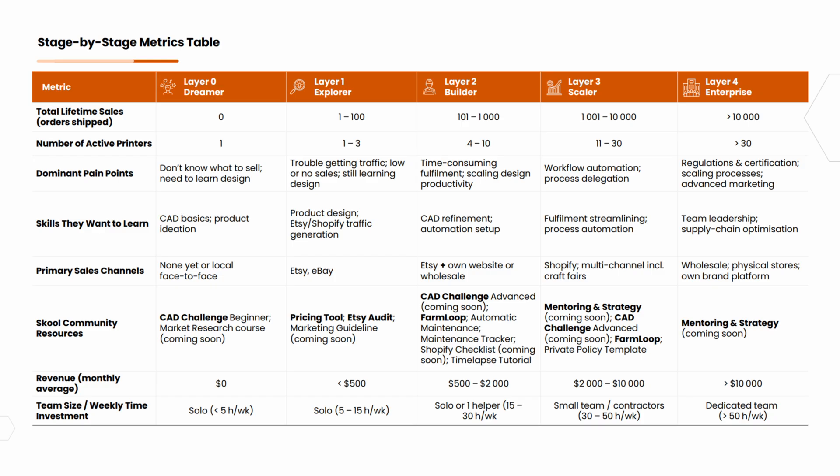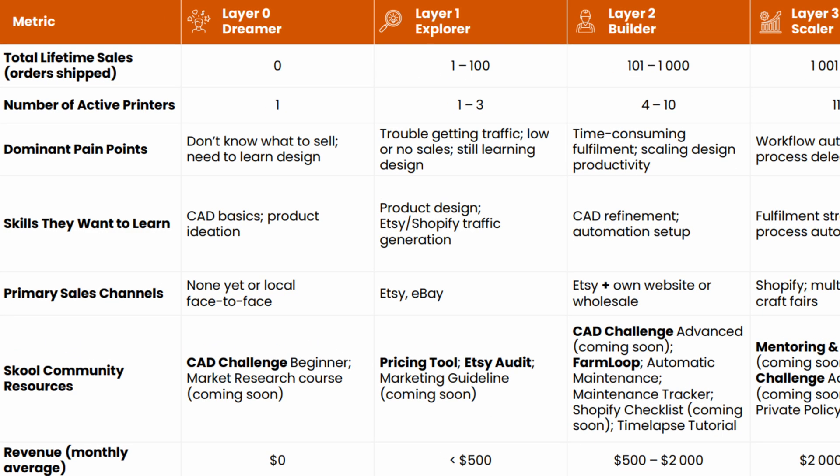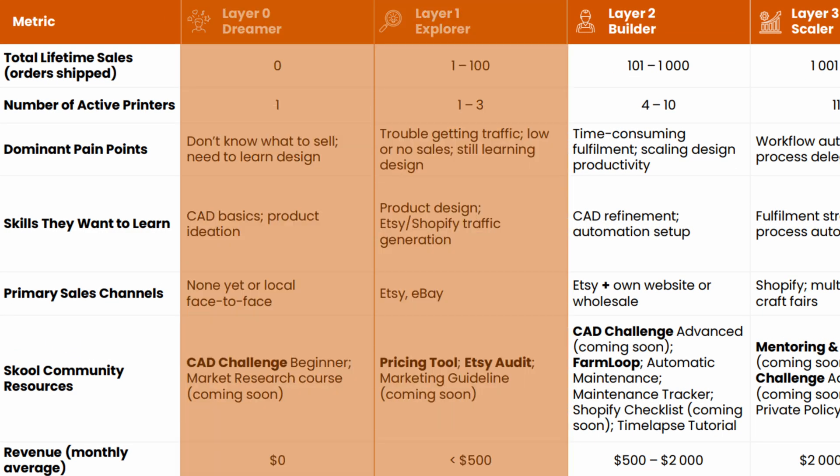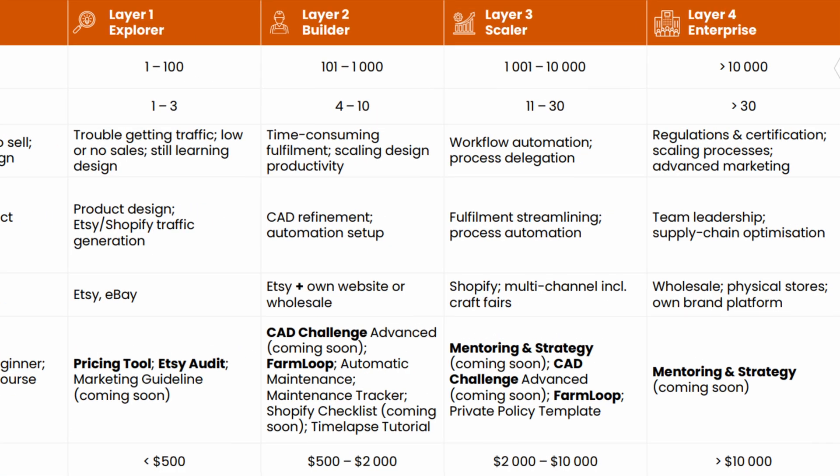Before we look at the comparison categories, let's consider at what stage of your 3D print journey it makes sense to have farm management software. If we pull up our farm layer roadmap, at layer zero or one — meaning under 100 sales and one or two printers — farm management software honestly doesn't make sense. There you should focus on growing sales and getting your foundation solid. But from layer two onwards, with a growing fleet of printers and orders, it becomes a necessity for profitable scaling.